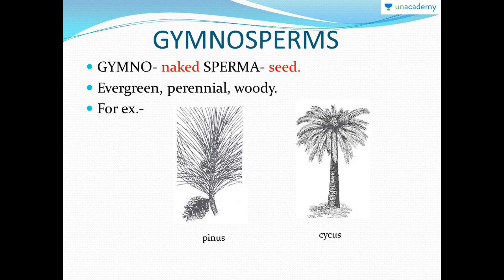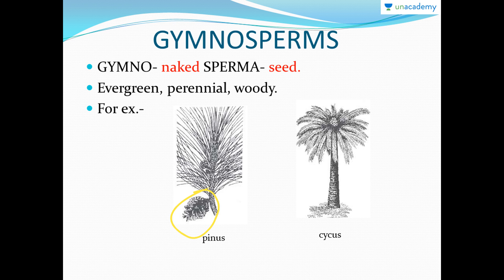As we studied before, gymnosperms are plants with naked seeds. These are evergreen and perennial — they always keep blooming. For example, this is actually a pinus plant seed. As you can see, there is no fruit on it; it is a bare seed. So we know that the gymnosperm group includes plants like pinus and cycas.